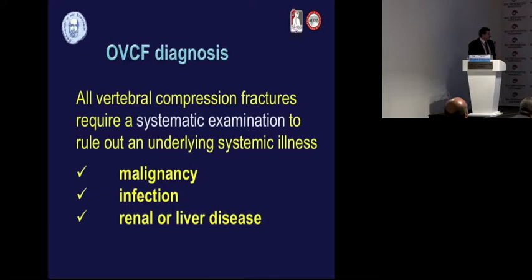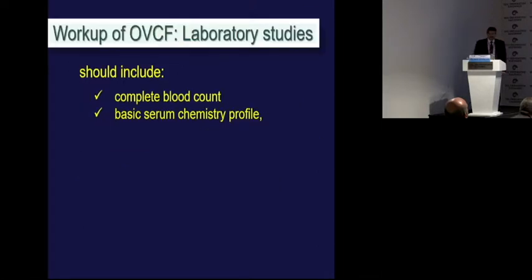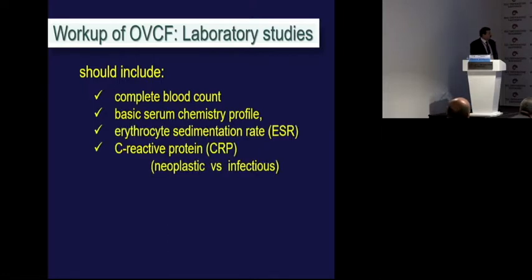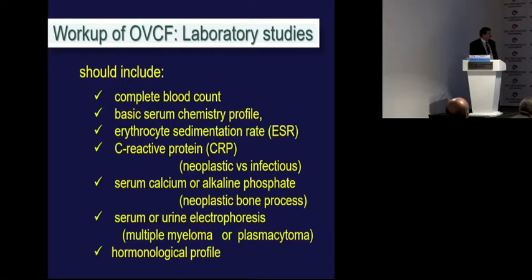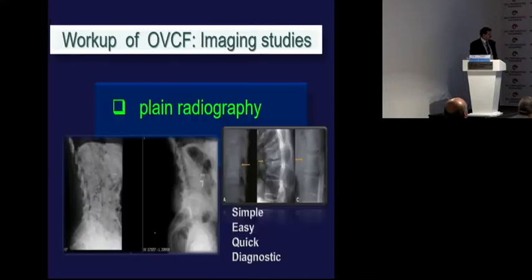All vertebral fractures require a systematic examination to rule out an underlying systemic illness. We must search for malignancy, infection, renal or liver disease. We must perform laboratory studies including blood count, basic serum chemistry profile, ESR, CRP, calcium, alkaline phosphatase, and serum and urine electrophoresis.